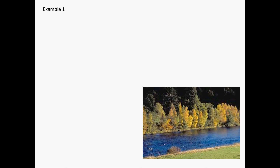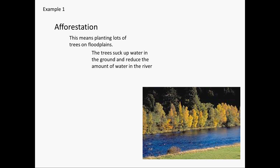Our first example is afforestation. This is basically the planting of lots of trees on flood plains. The trees suck up water using their roots from the ground and reduce the amount of water in the river at a set point. This in turn decreases the risk of a flood.